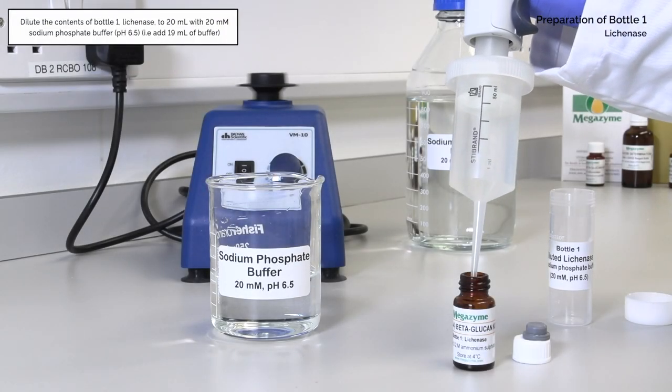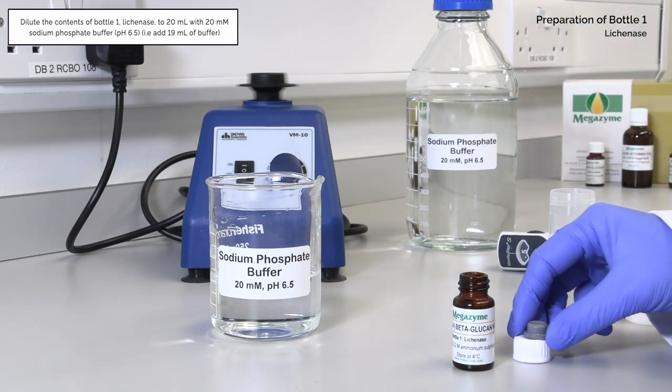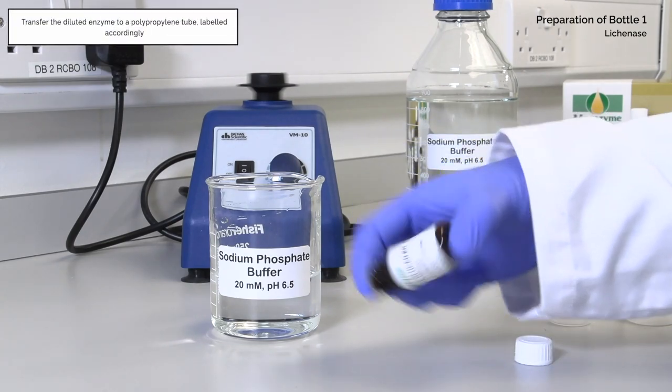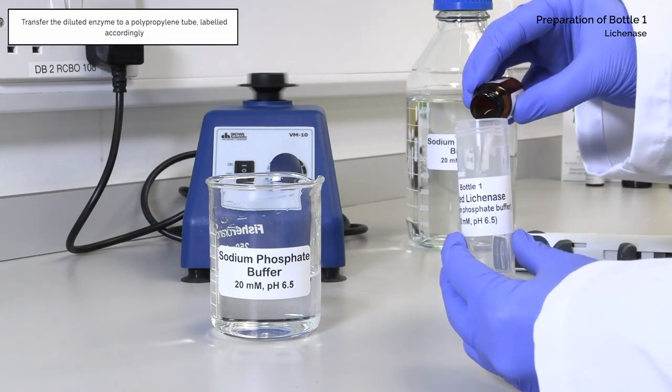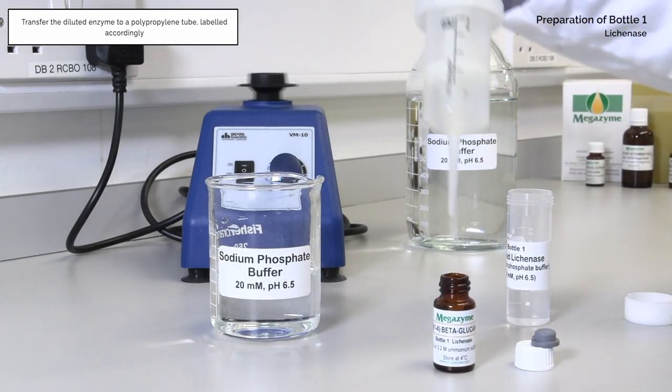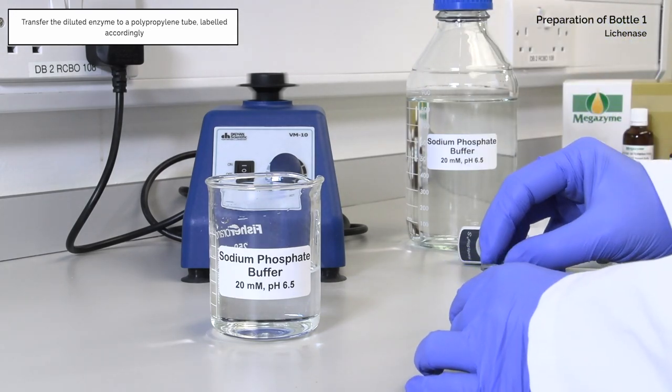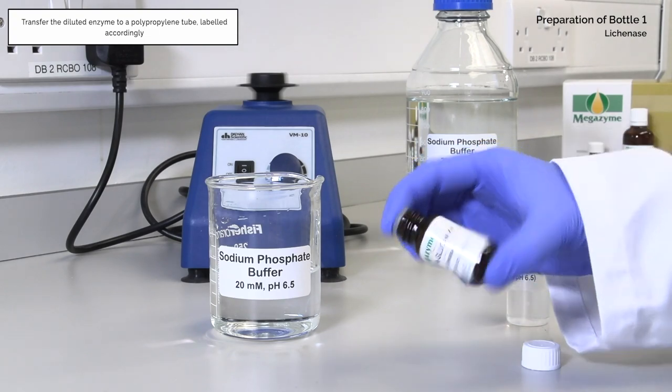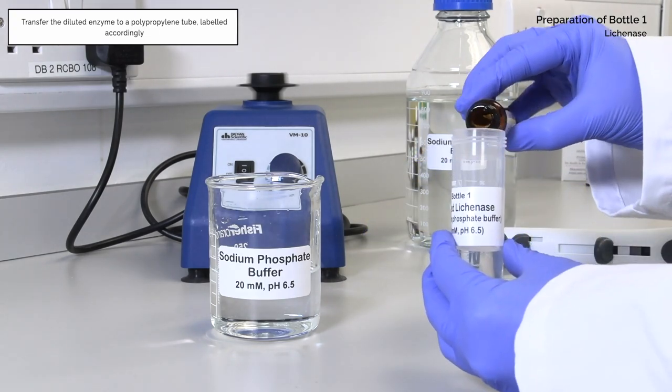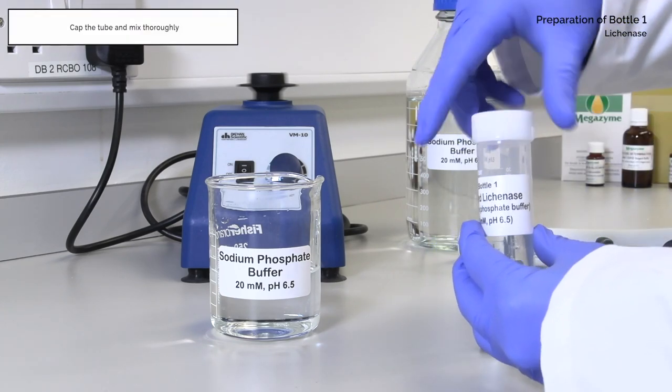The contents of bottle 1, lichenase, is diluted to 20 milliliters with 20 millimolar sodium phosphate buffer pH 6.5. The diluted enzyme is transferred to a polypropylene tube, labeled accordingly. Cap the tube and mix thoroughly.